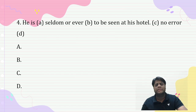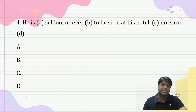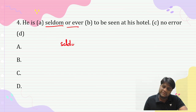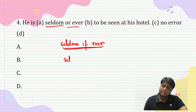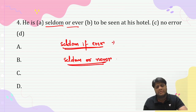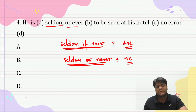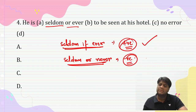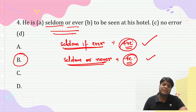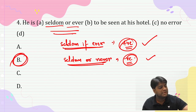'He is seldom or ever to be seen at this hotel.' Remember these two phrases: 'seldom if ever' means 'hardly ever' and is used in a positive tone; 'seldom or never' means 'hardly ever at all' and is used in a negative tone. 'Seldom or ever' is incorrect. Answer is B part.